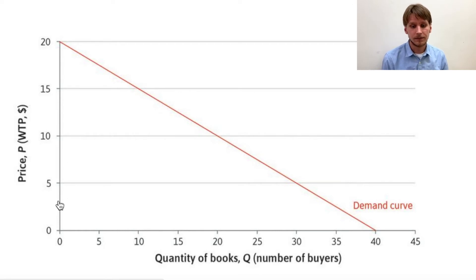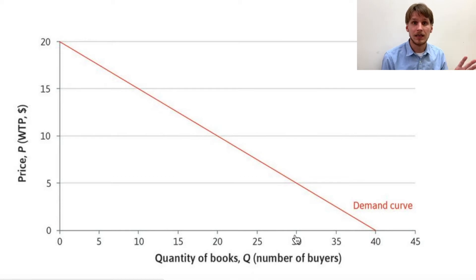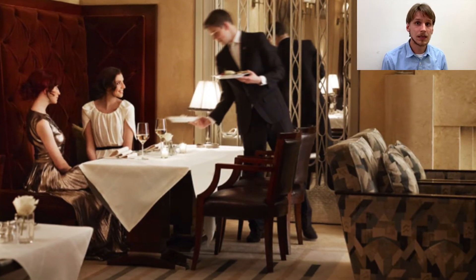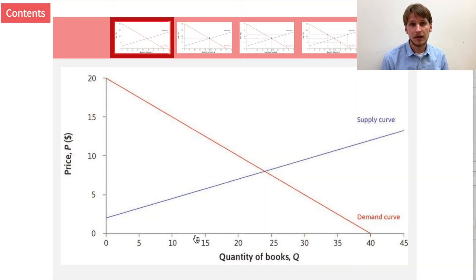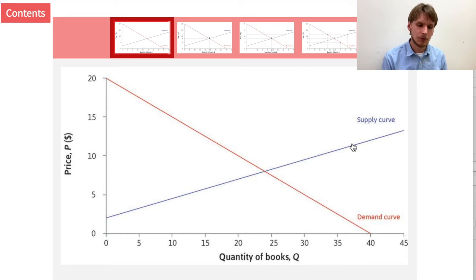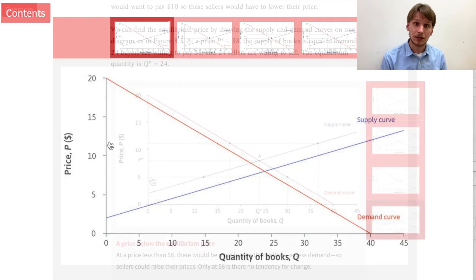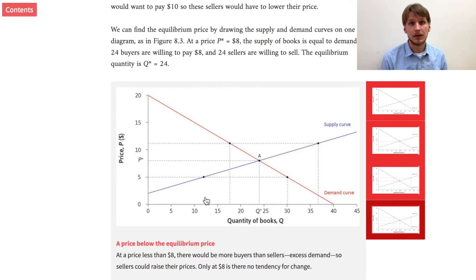But when the price is low, the demand is very high. Of course, this doesn't apply to all products or all services, but it gives you a basic idea of how markets work. If the price is high, there is less demand; if the price is low, there is more demand. If the price is high, people want to sell that product. But if the price is low, they don't want to sell it because they won't make a great profit or benefit from the sale.